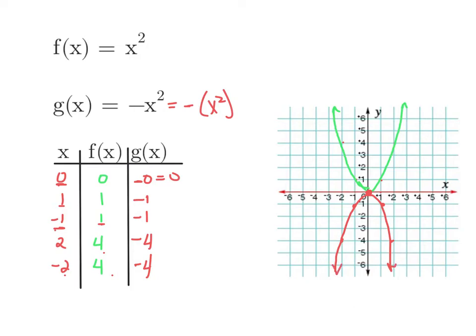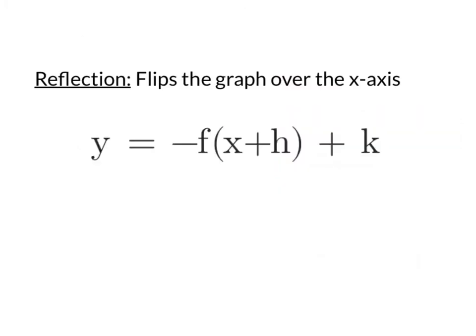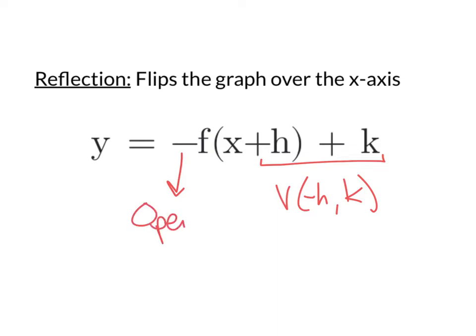So all those values are the same, but when we take the opposite of them, they all became negative. We'll have the exact same shape — it'll just be down here. So what this does is take the normal parent graph and flip it over the x-axis. We call that a reflection any time that we flip the graph over the x-axis. So when we have y equals negative f of x plus h plus k, remember that h and k give us our vertex. Our vertex is going to be at negative h, positive k — the opposite of h and the same as k.